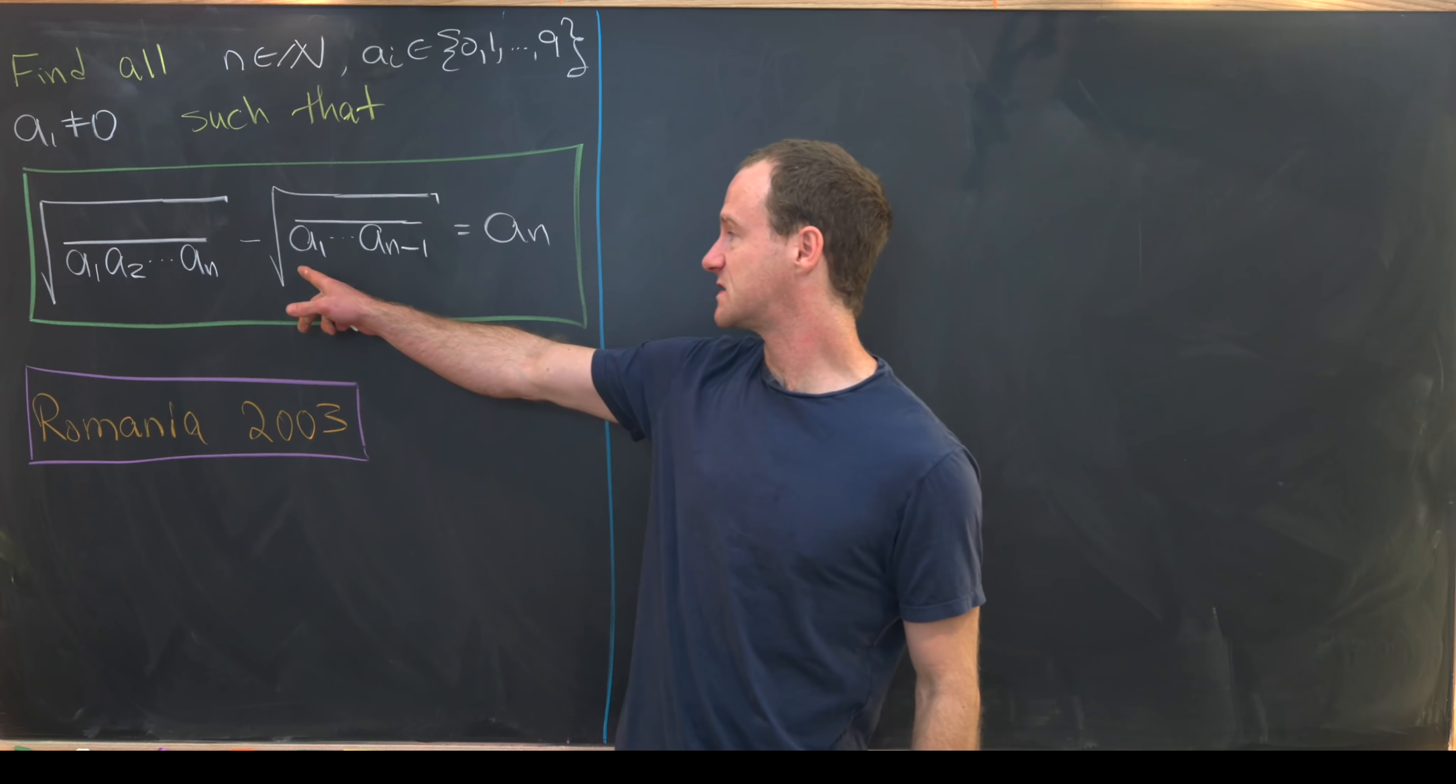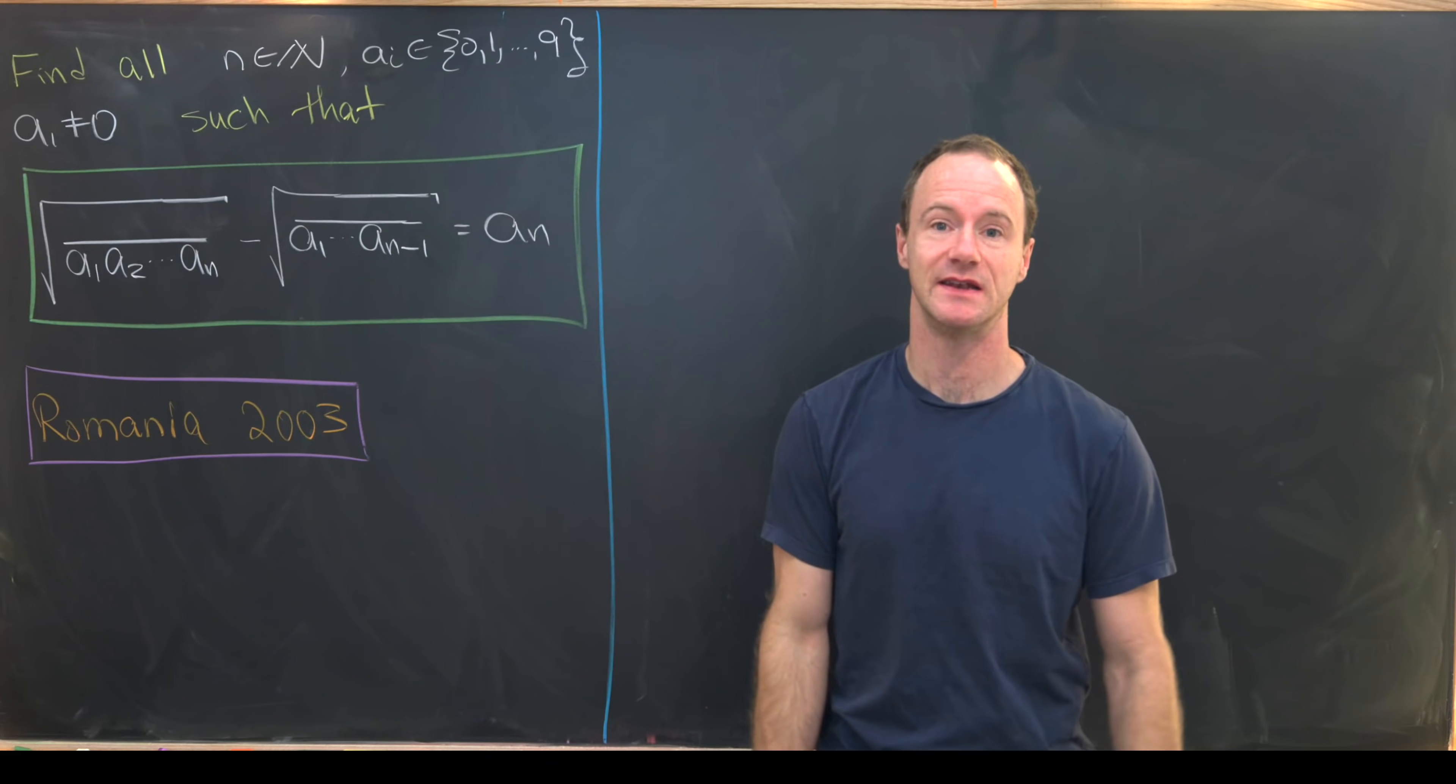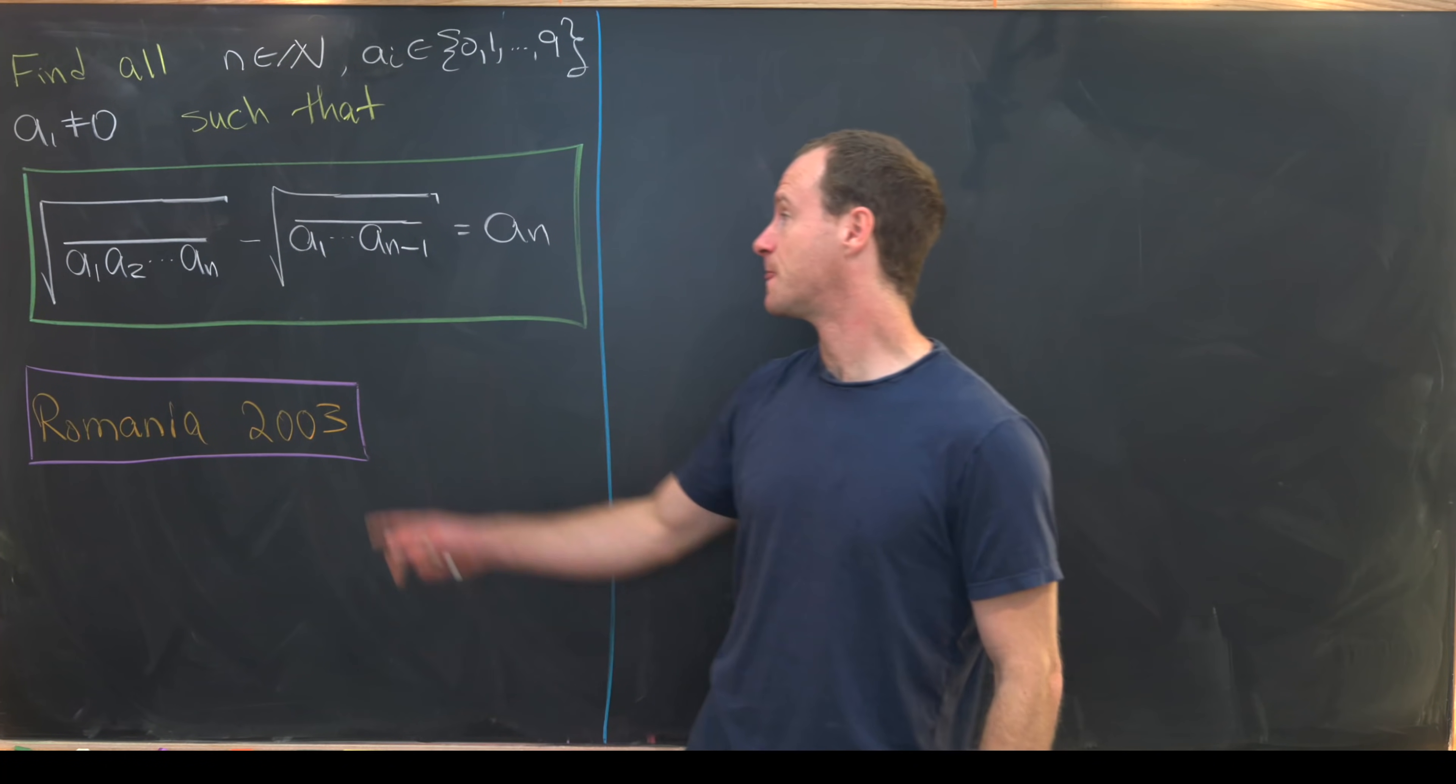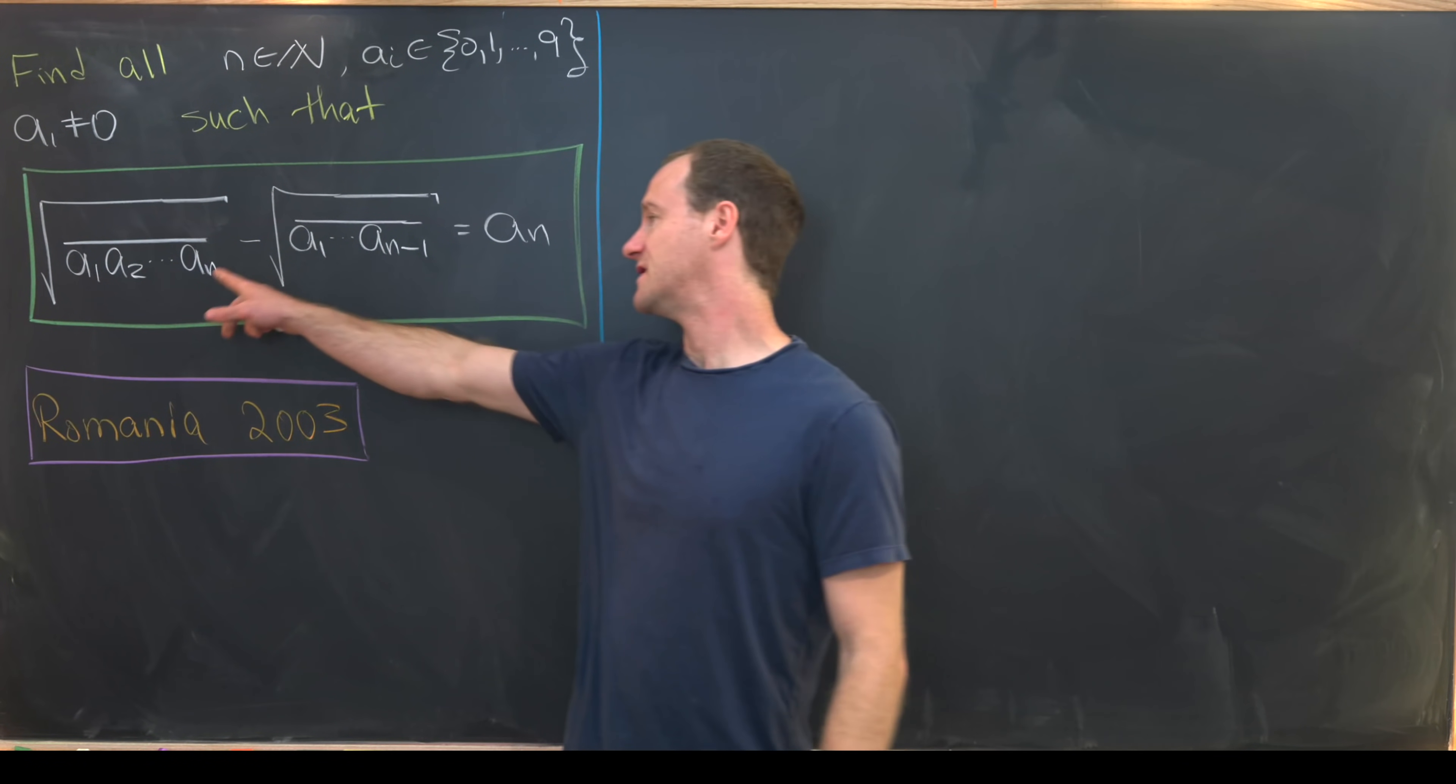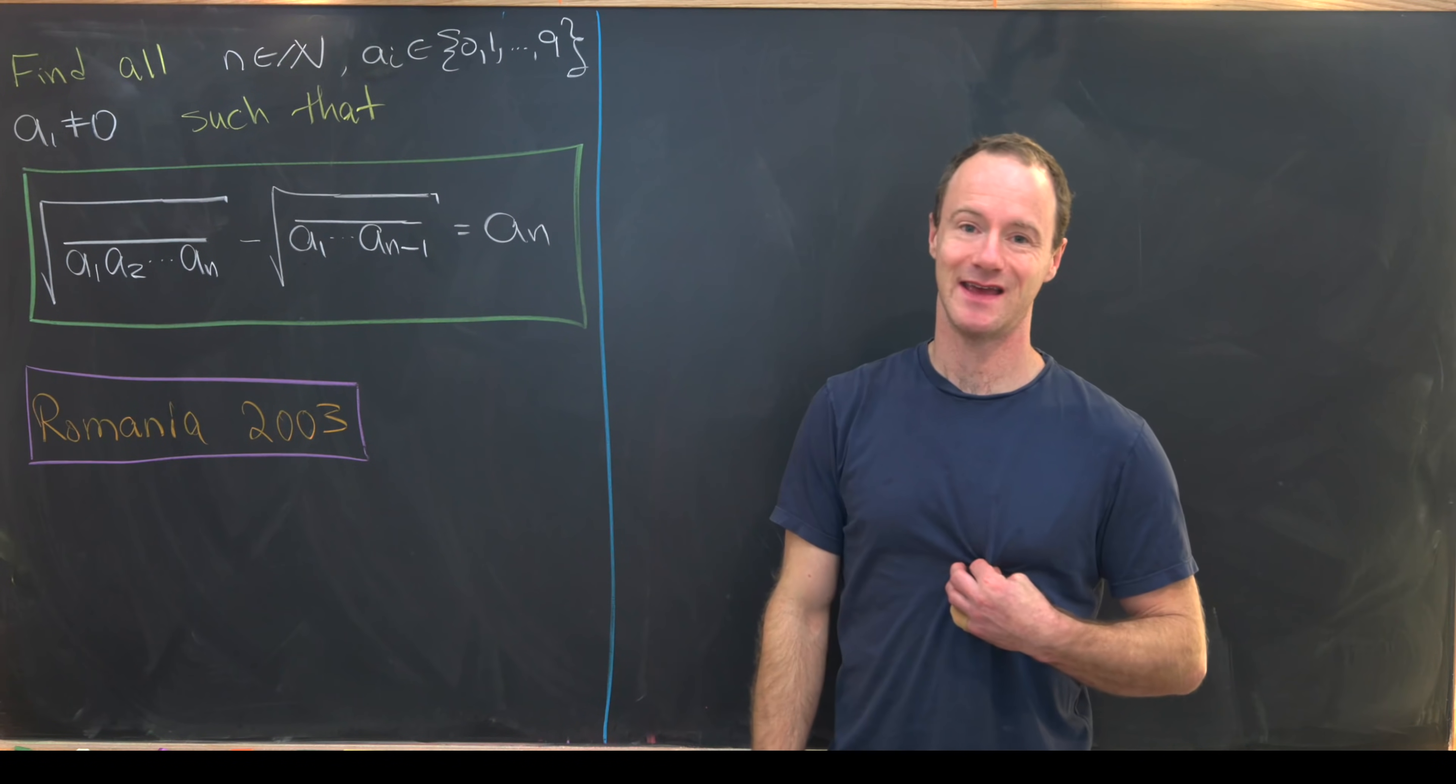If we've got some string of numbers that are all between 0 and 9 with a line over them, that means we're forming the number with those digits. So this is the number with digits a1, a2, up to an-1, and then this is the number made out of the digits a1, a2, up to an.